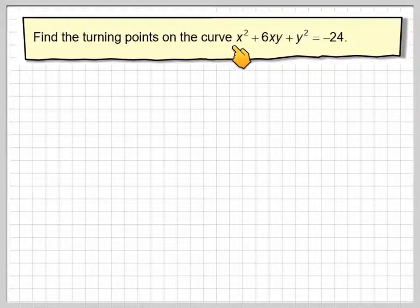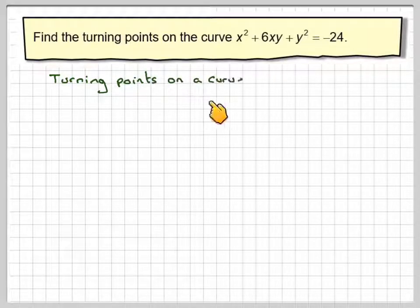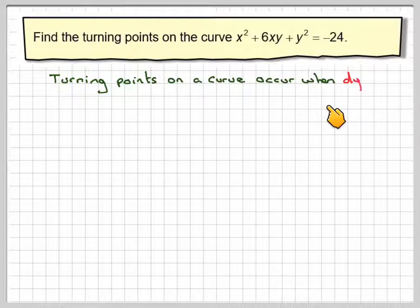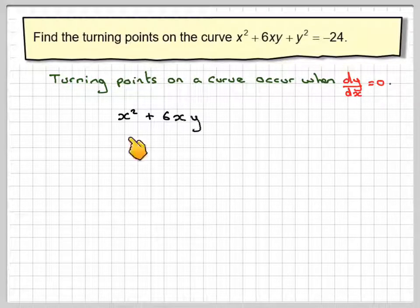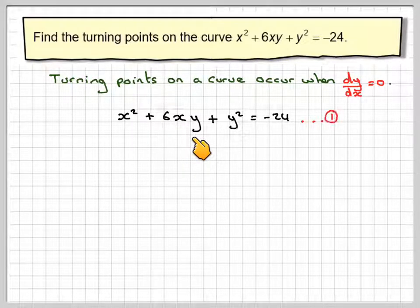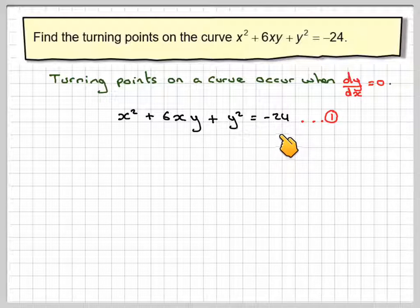Find the turning points on the curve x squared plus 6xy plus y squared equals minus 24. Turning points on a curve occur when dy by dx is equal to 0. So we take our implicit function x squared plus 6xy plus y squared equals minus 24.